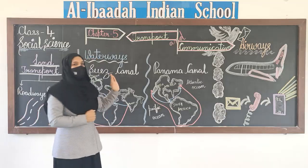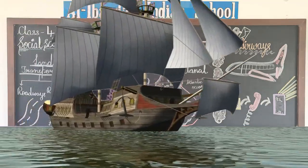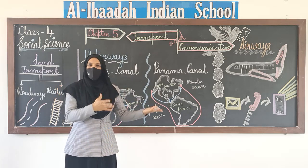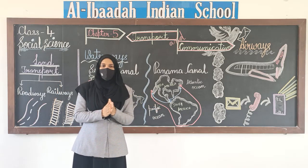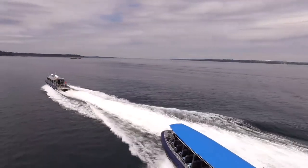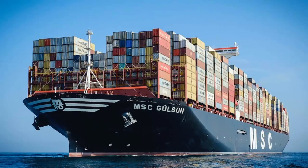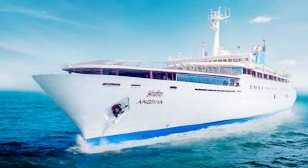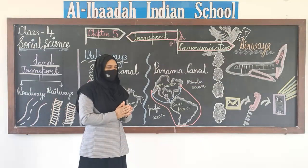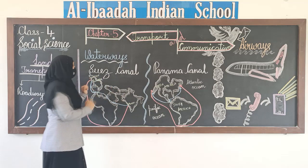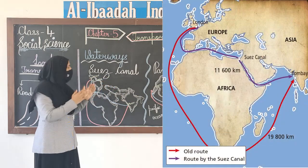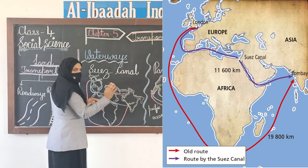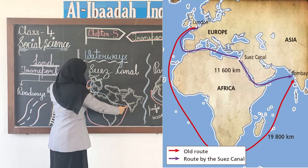Next we have waterways. Vehicles used include motorboats, ferries, and steamers in big rivers like the Ganga and Brahmaputra. We also have passenger boats and cargo boats which carry heavy equipment and furniture from one place to another. There is also coastal shipping used between Goa and Mumbai. Now, the Suez Canal — a canal was made to shorten the sea route.